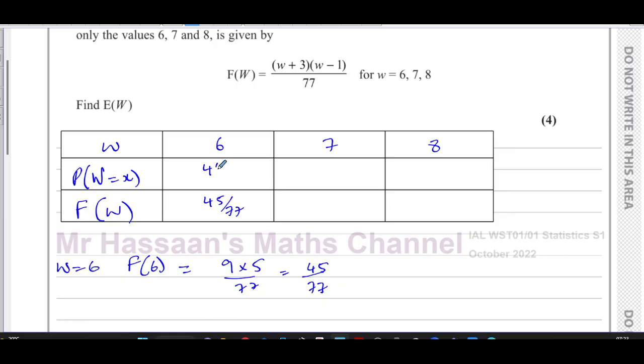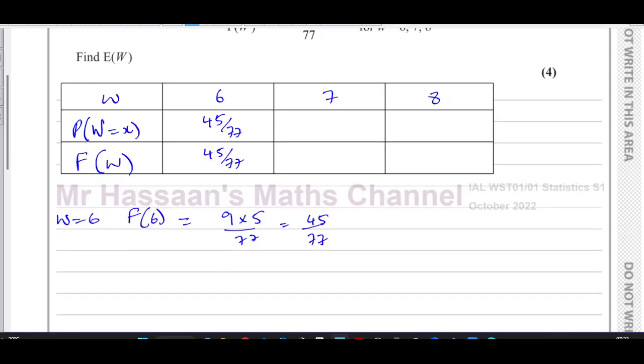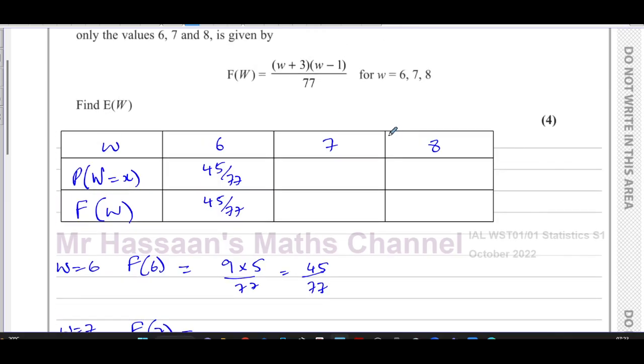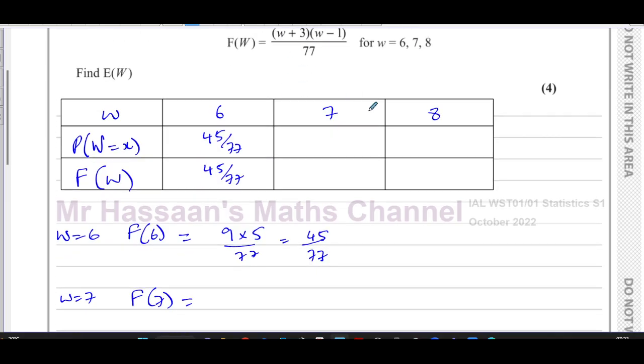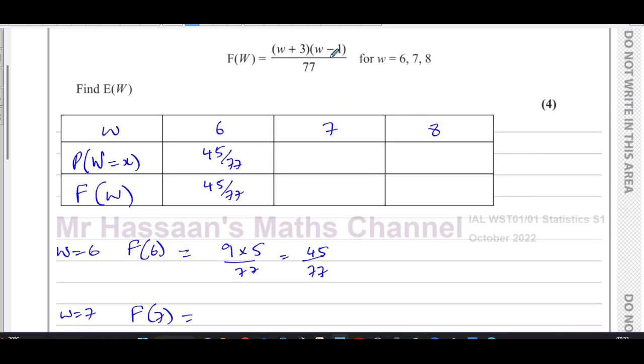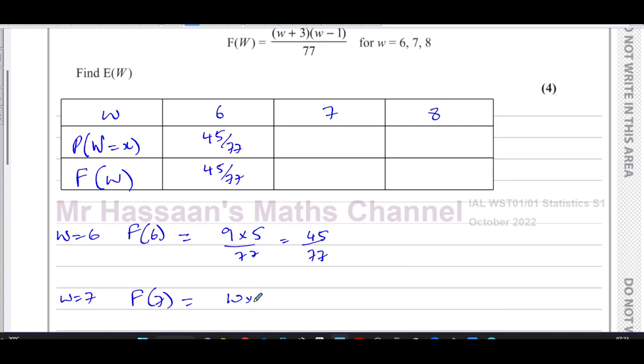For W equals 7, when W equals 7, you have F(7) is equal to, and we're going to put instead of W, 7. So that'll be 7 plus 3 which is 10, times 7 minus 1 which is 6. So 10 times 6 over 77, which gives us 60 over 77. All right, so that's the cumulative probability.